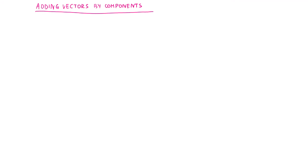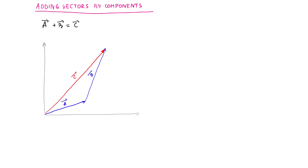Let's discuss adding vectors by components. Suppose vector A is added to vector B and the resultant vector is C. If we draw the vector components for vector A and vector B, we would have an X component of vector A and a Y component of vector A. For vector B, I would draw the X component of vector B, so this would be BX.